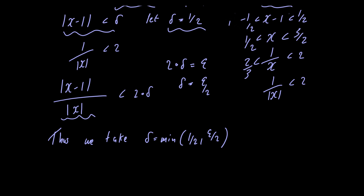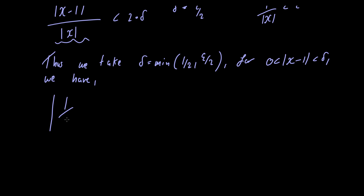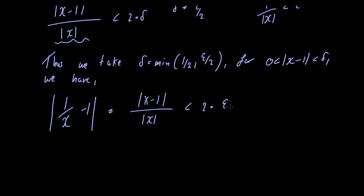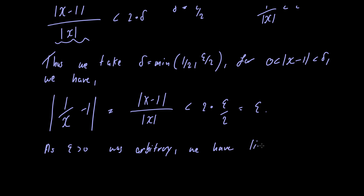For 0 less than the absolute value of x minus 1 less than delta, we have the absolute value of 1 over x minus 1 equals the absolute value of x minus 1 divided by the absolute value of x, which is less than 2 multiplied by epsilon over 2, which equals epsilon. Since epsilon greater than 0 is arbitrary, we have proved that the limit as x approaches 1 of 1 over x is equal to 1.